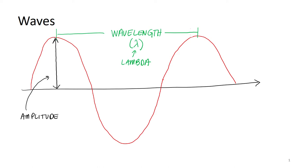In other forms of waves, these properties determine different things. For sound waves, the wavelength determines the pitch — how high or low the sound is. The amplitude determines the volume, how loud or soft it is. Those are physical properties that come out of these measurements.